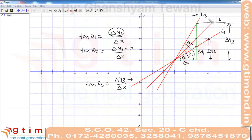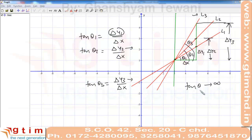L3 is the steeper line and hence has the greatest slope. When we rotate the line in the anti-clockwise direction the slope of the line increases. When the line becomes almost vertical, the value of delta X is extremely small and the value of delta Y is very high, so the value of slope tan theta approaches infinity. We conclude that a vertical line has slope infinity — meaning a very high value.